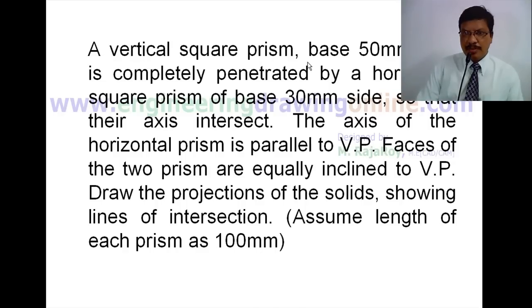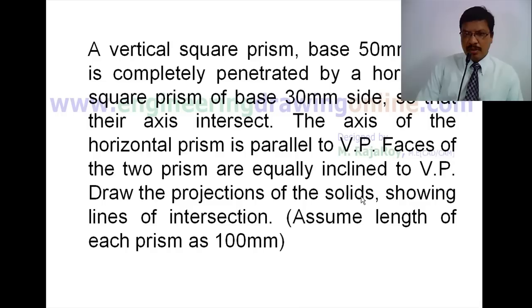A vertical square prism with a 50 mm side base is completely penetrated by a horizontal square prism of 30 mm side base, so that their axes intersect. The axis of the horizontal prism is parallel to VP. The faces of both prisms are equally inclined to VP. Draw the projections of the solids showing the lines of intersection.